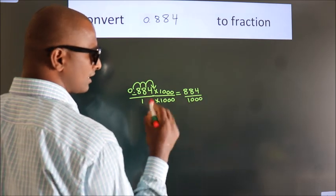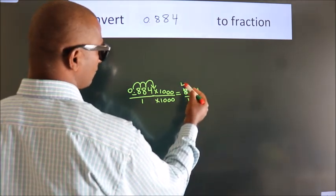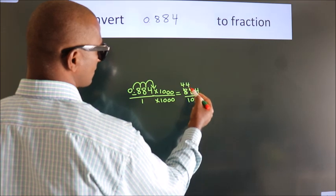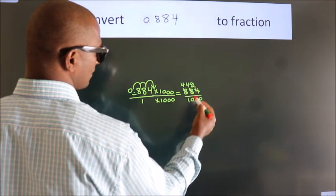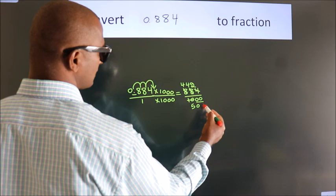Now I cancel with 2. 2 fours 8, 2 fours 8, 2 twos 4, 2 fives 10. These zeros as it is down.